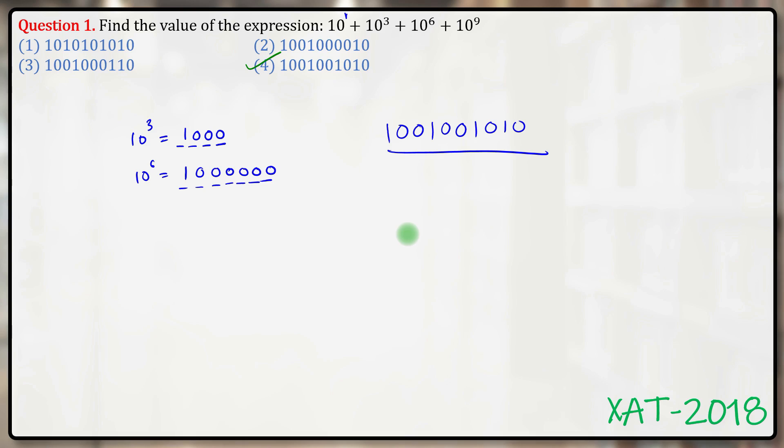In fact, in the exam you could have done something far more easy and quick. You could have seen that the first answer cannot be the correct answer because it has 5 ones in it, whereas our answer must contain only 4 ones.